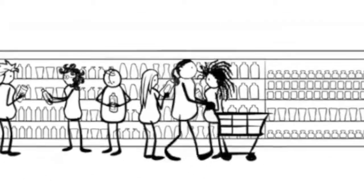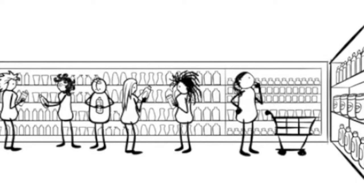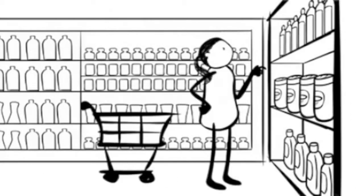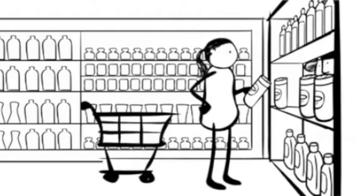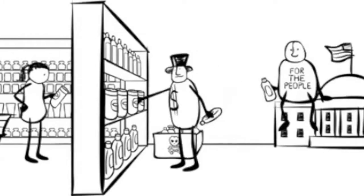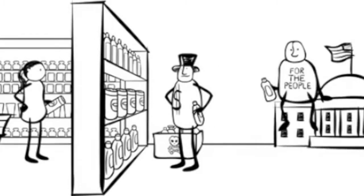But what about the choices that really matter, like the choice to buy products that are safe? It turns out the important decisions don't happen when I choose to take a product off the shelf. They happen when companies and governments decide what products should go on the shelves. So who are these companies?